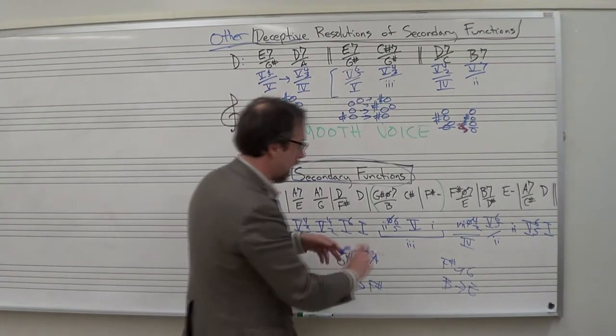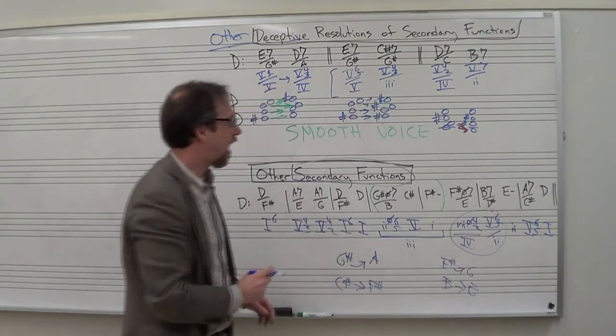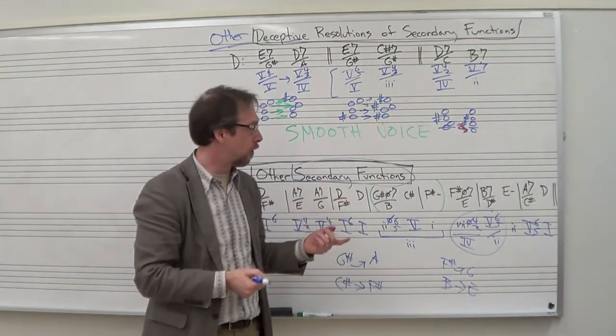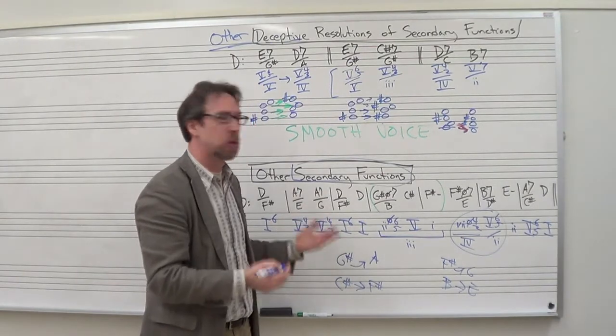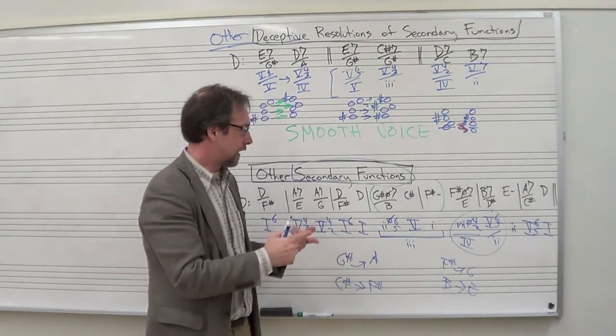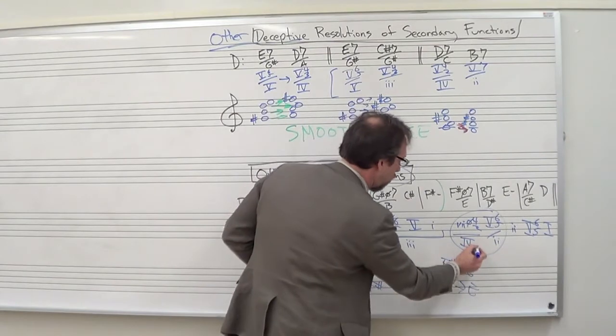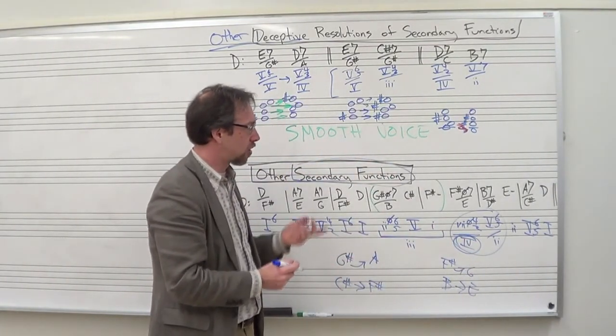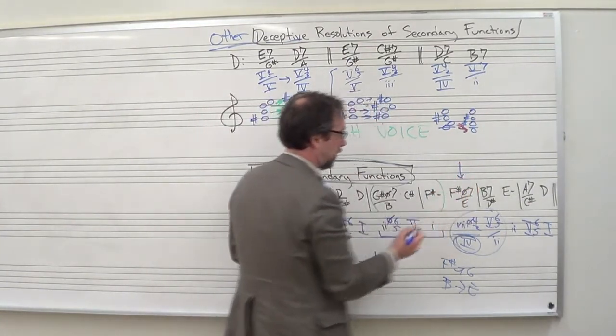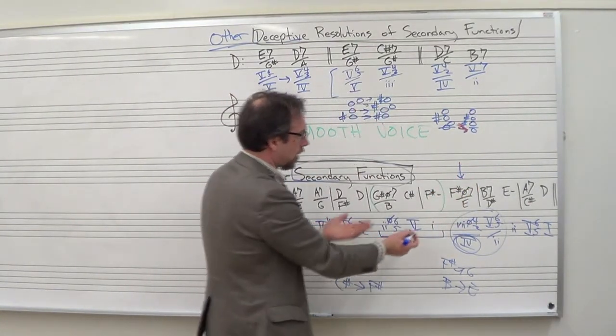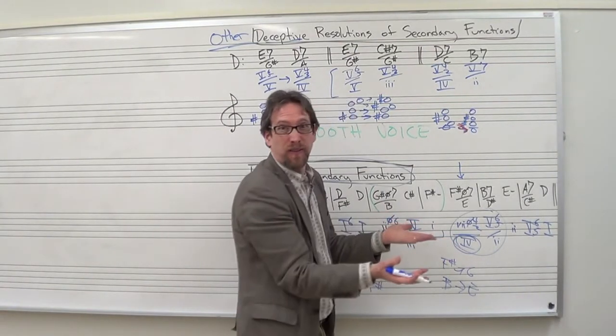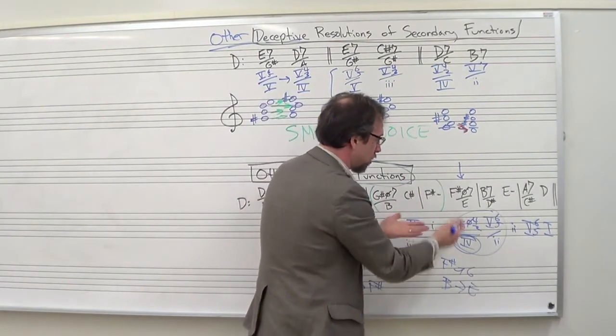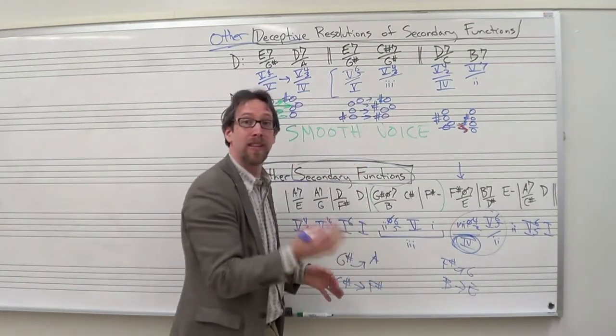That 7 half diminished 4-2 of 4 going to a 5-6-5 of 2 is an unusual progression. It doesn't resolve to the 4 chord like we're expecting it, nor does it resolve deceptively. Major minor 7 chords were resolved deceptively. 7 chords almost always resolve to where you would expect them to go. This one doesn't.